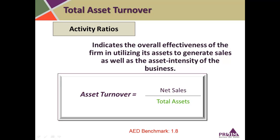Asset turnover is an activity ratio that indicates how you're working the assets of the business to generate sales, and it gives you a sense of the asset intensity of the business. It's calculated as net sales divided by total assets. The AED's benchmark is about 1.8 for a heavy equipment distributor, meaning you're generating $1.80 of sales for every dollar of assets.